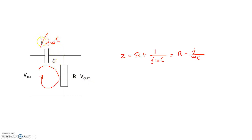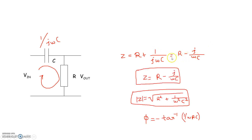Convert the capacitor into its AC equivalent model: the capacitor becomes 1/jωC, and the resistor remains a resistor. The total equivalent impedance of the circuit is Z = R + 1/jωC, which equals R − j/ωC, because 1/j equals −j.